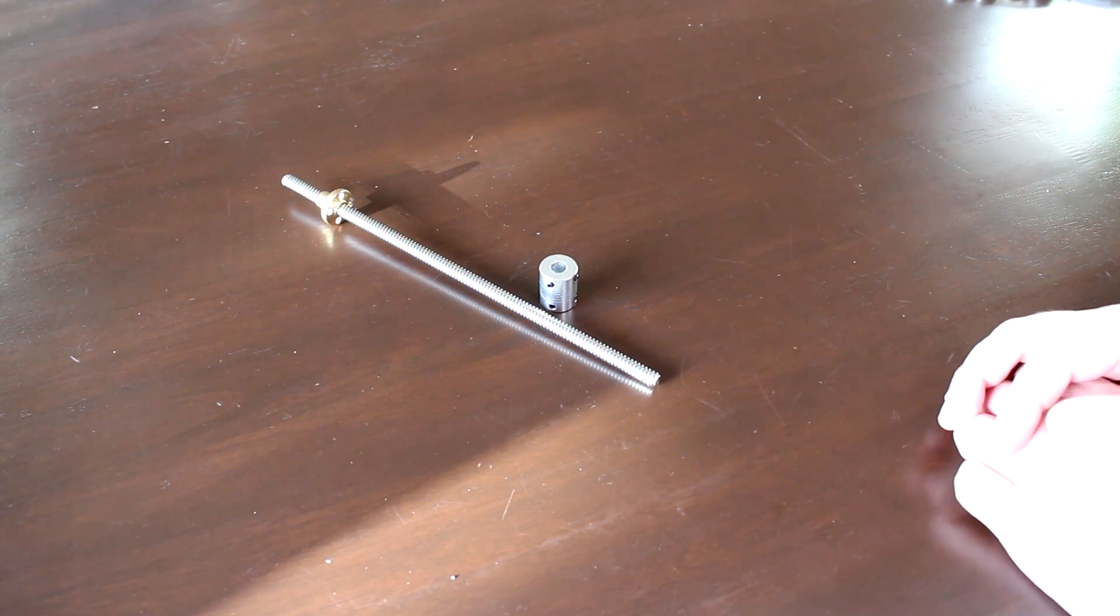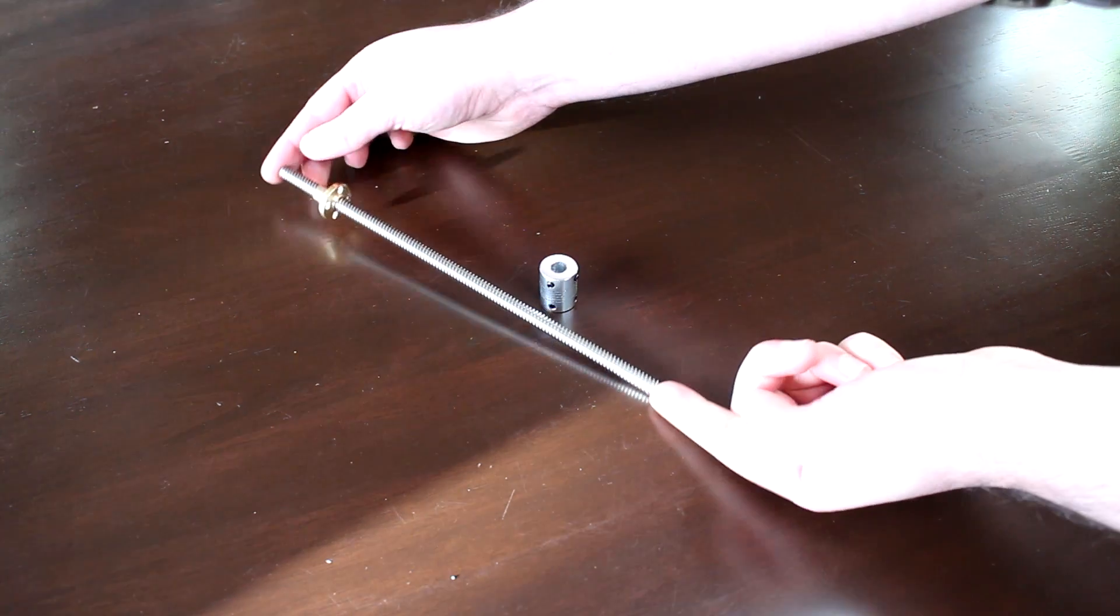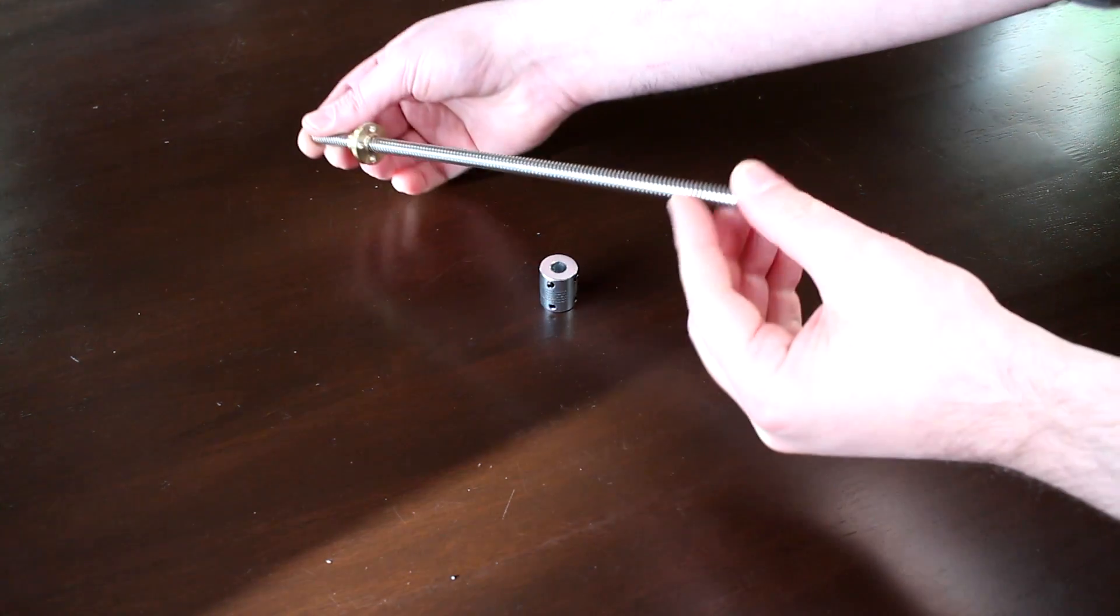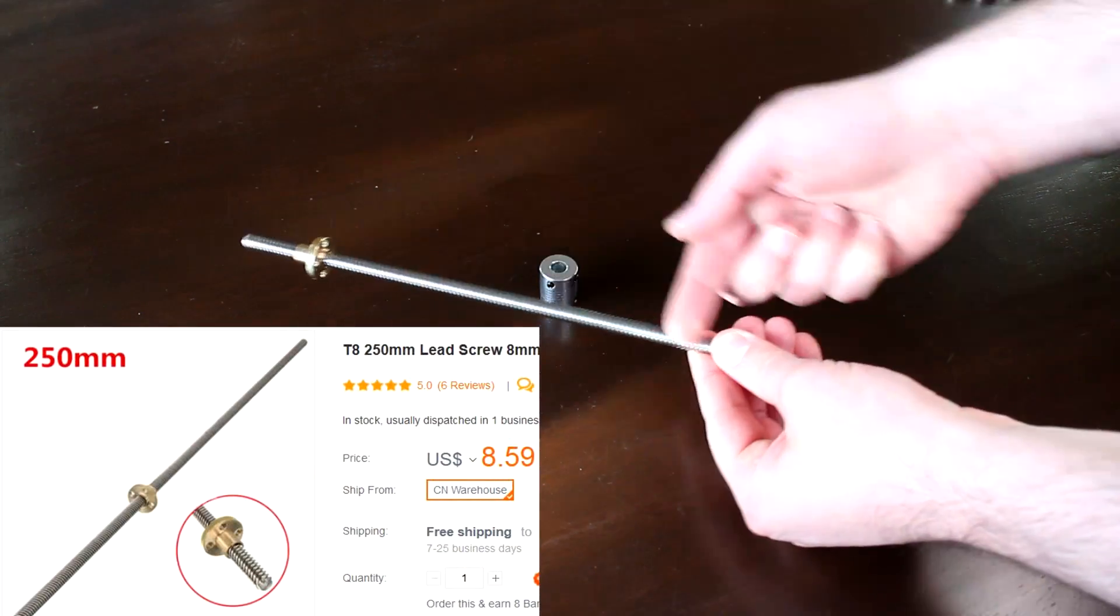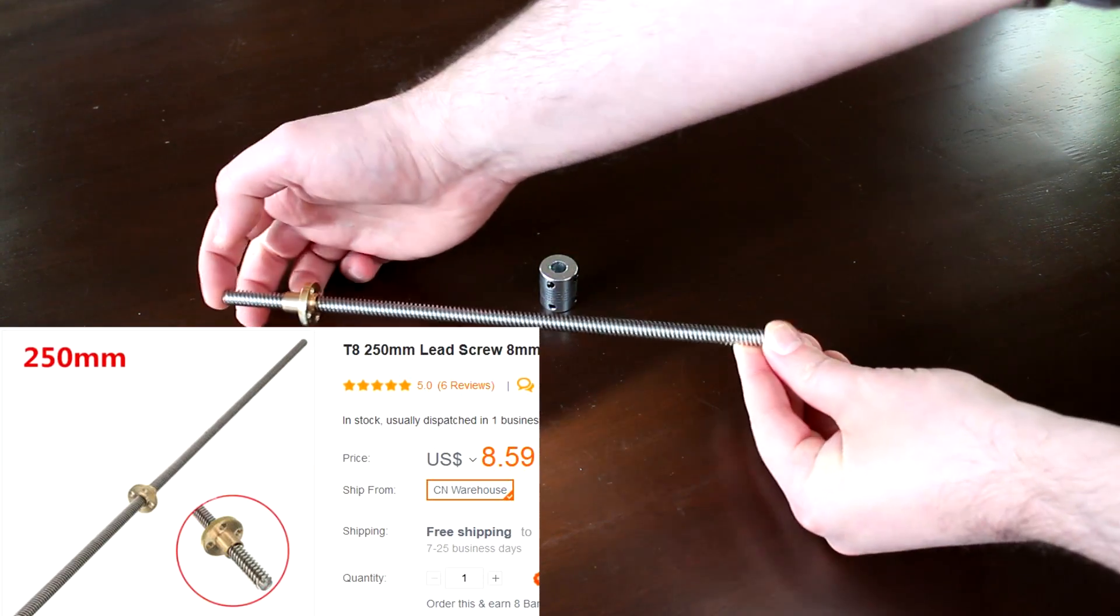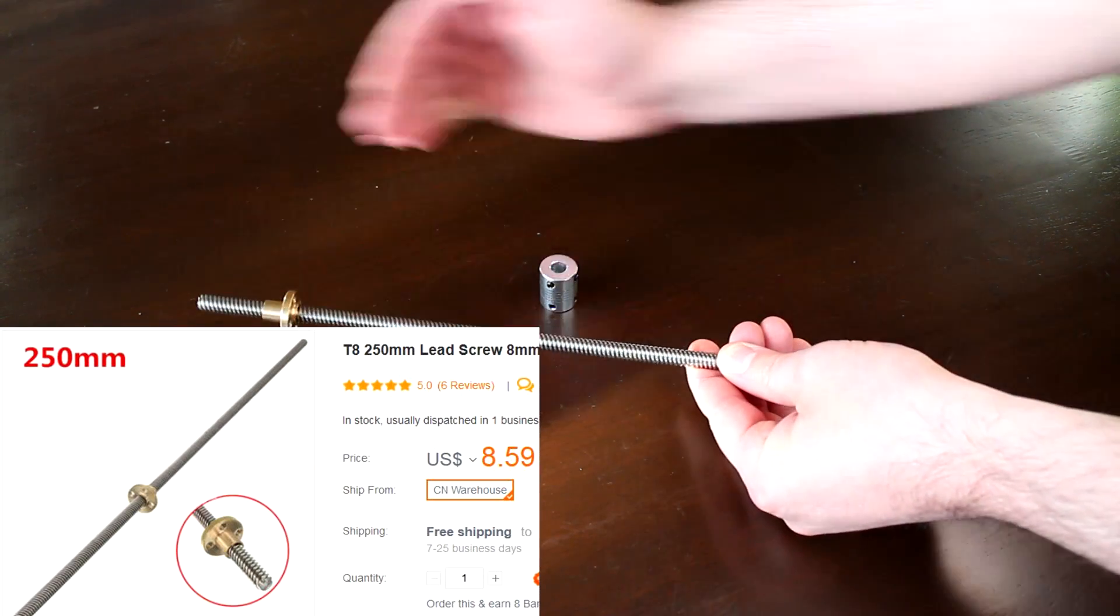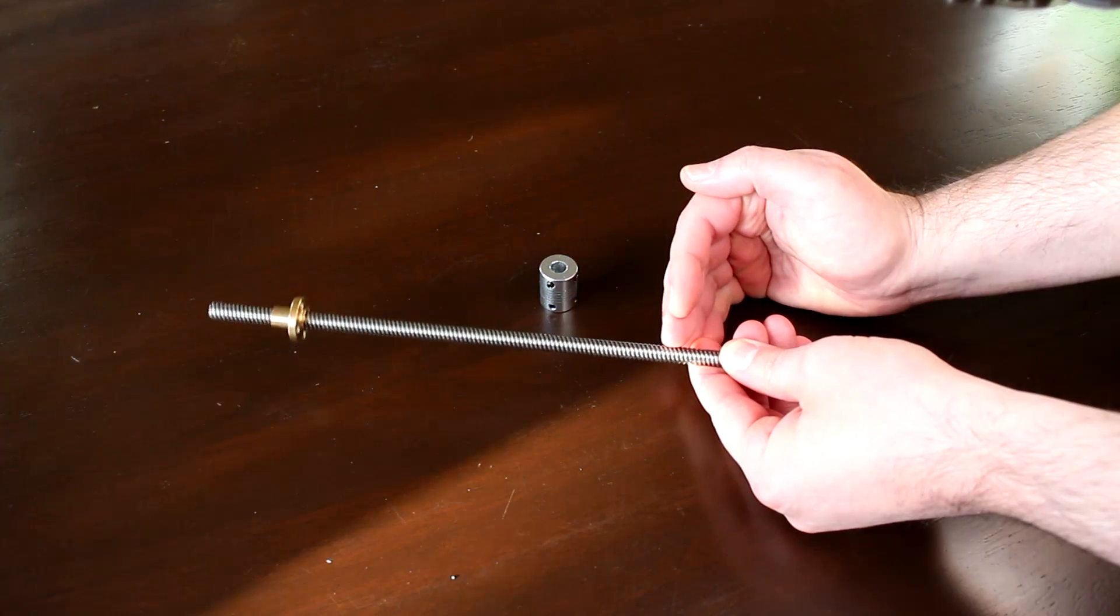For the z-axis, I'll be moving away from M5 threaded rod and utilizing 8mm lead screws. I bought these online, this is quite cheap, this is 250mm in length. Hopefully that gives me enough height for the 200mm print distance.